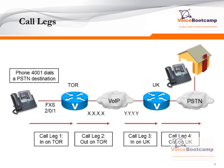When the router receives the call, it will process the call and then send the call to the destination. That will be call leg number 4. So at minimum, you have four call legs to establish a call between two IP phones over two routers.